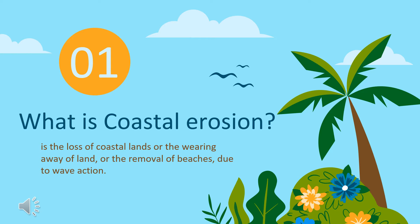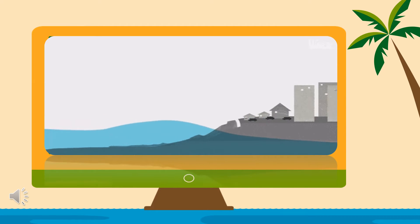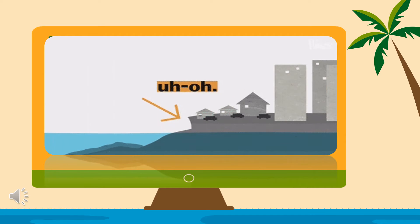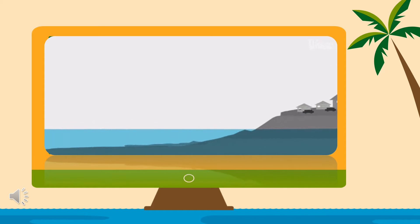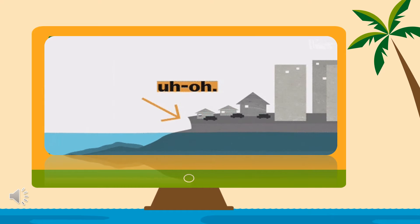Now that you have an idea about coastline, let's discuss what coastal erosion is. Coastal erosion is the loss of coastal lands, the wearing away of land, or the removal of beaches due to wave action. It is typically driven by the action of waves and currents, but also by mass wasting processes on slopes, particularly on muddy coasts. As you can see in the video, it is driven by wave action, causing land to be eroded by water. That is what coastal erosion is.